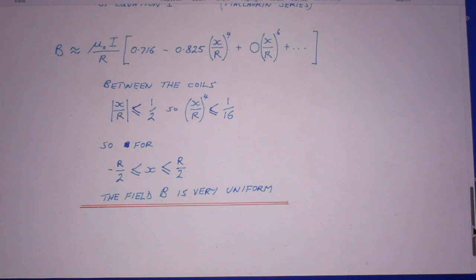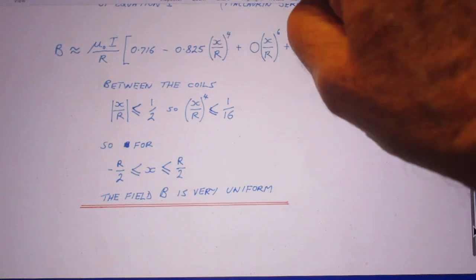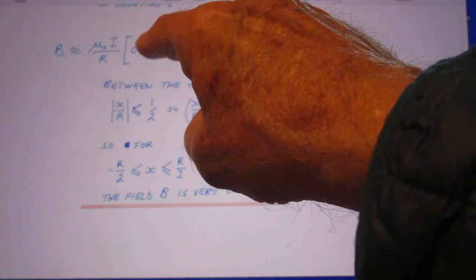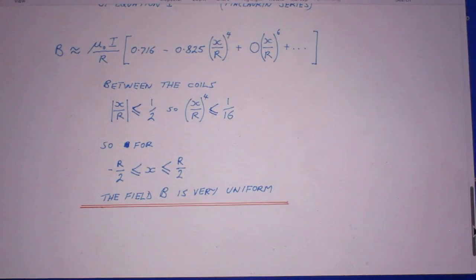So he comes to the conclusion, since the term here is so small, it's really largely driven by this one, that the B field is very uniform.